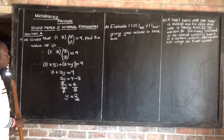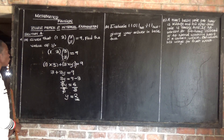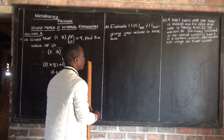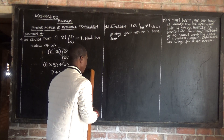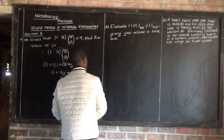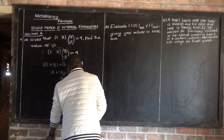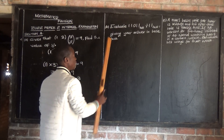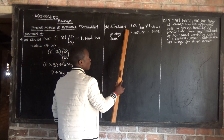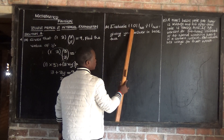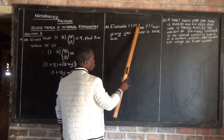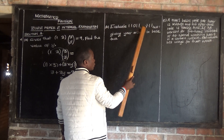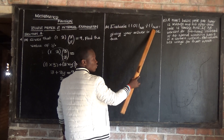Let's look at Question 1B, which is a question on number bases. We are told to evaluate — and evaluate means to find the exact value. We evaluate 11011 divided by 11. These two numbers are in base 2.